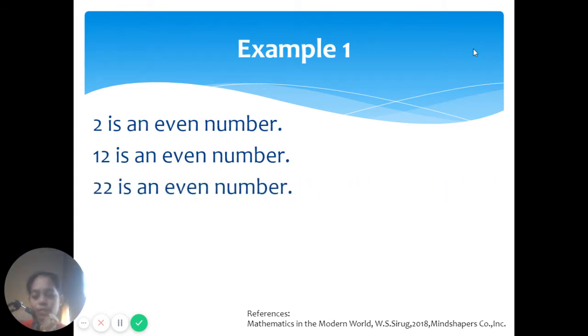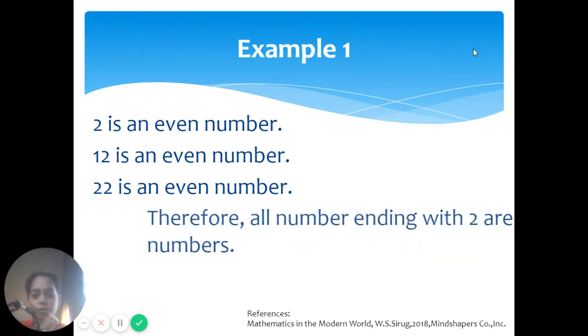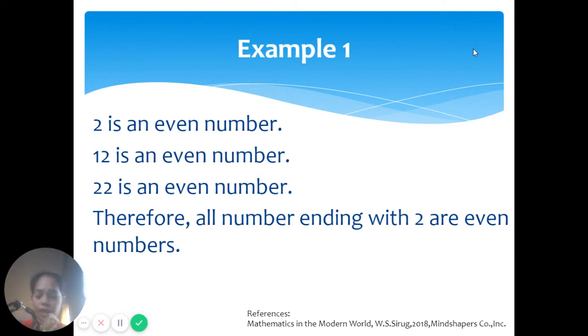Observing the statements given, we can generalize that, therefore, all number ending with 2 are even numbers. Now, this part, therefore, all number ending with 2 are even numbers, is what we call the conclusion or conjecture.